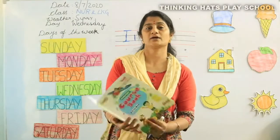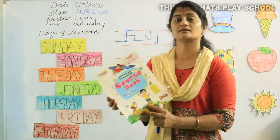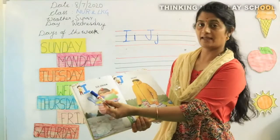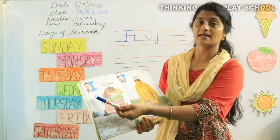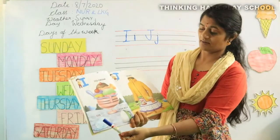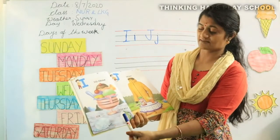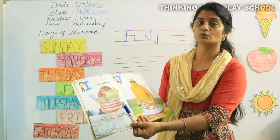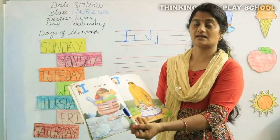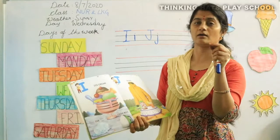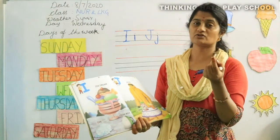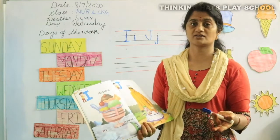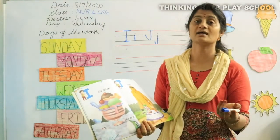Now let's take a look at our course book. This is the nursery course book in which I makes the sound E. I for ice, iron box, ice cream, igloo, insect. Insects are small animals that are very small in size. They are like butterfly, mosquito, housefly — all those are insects.